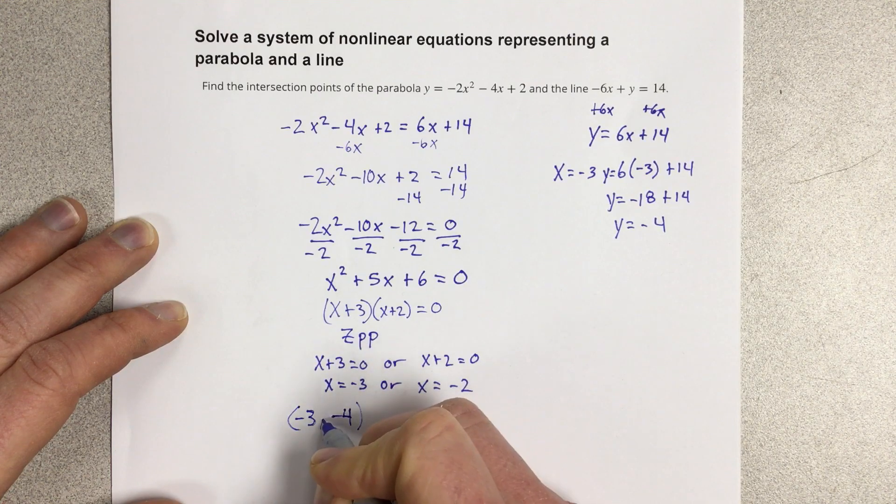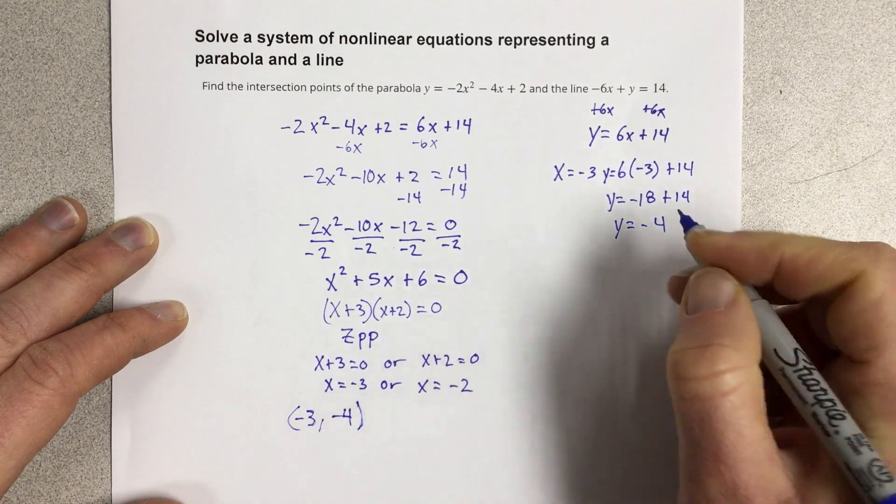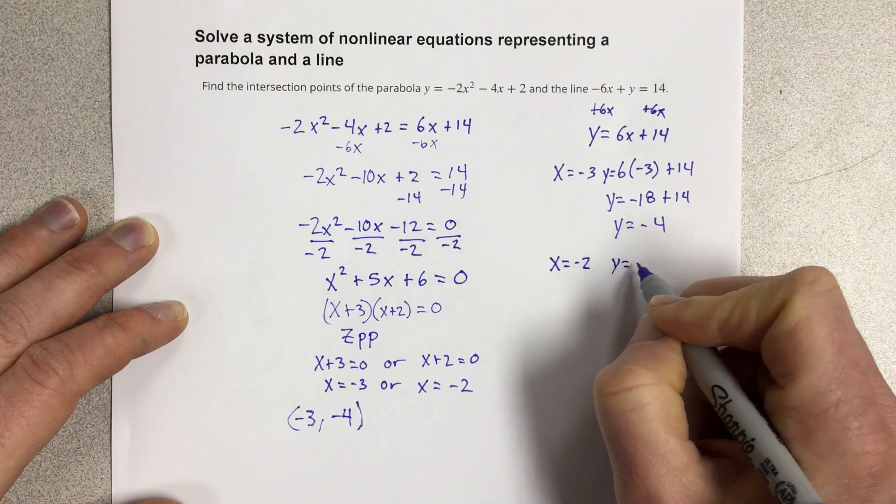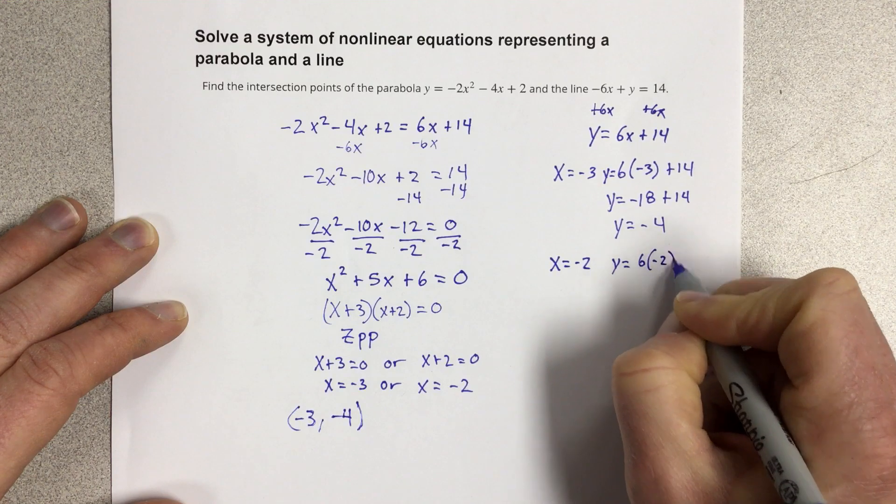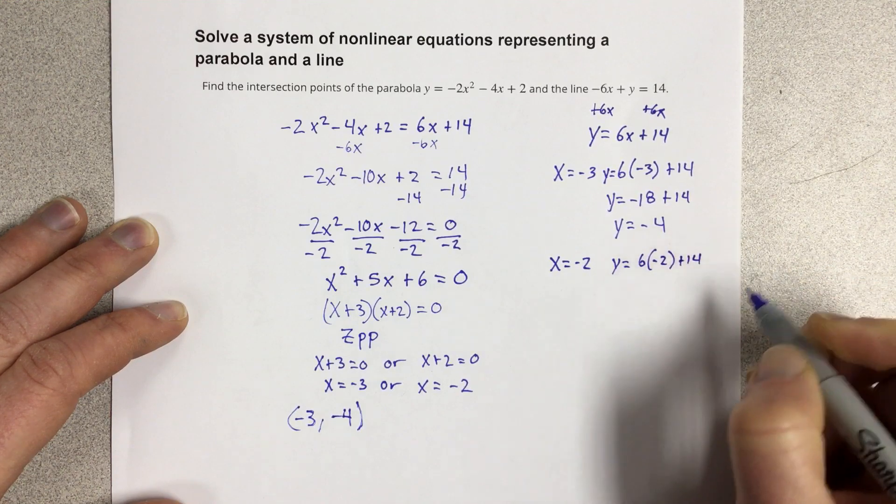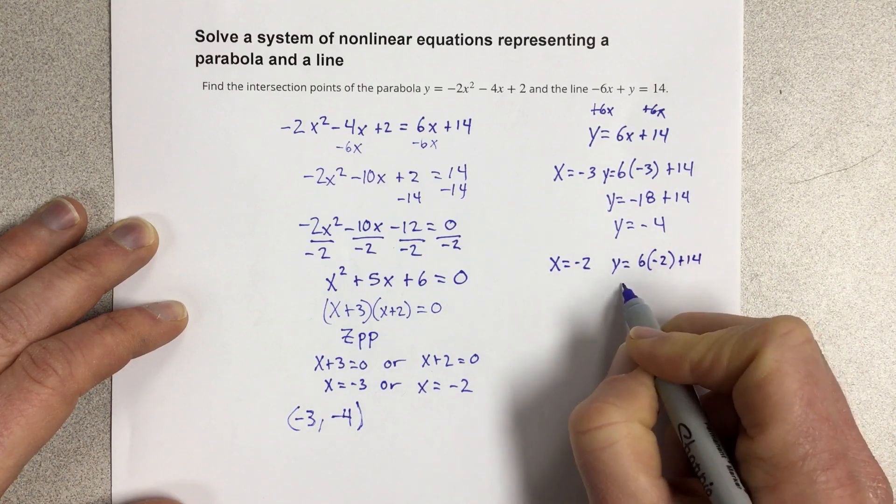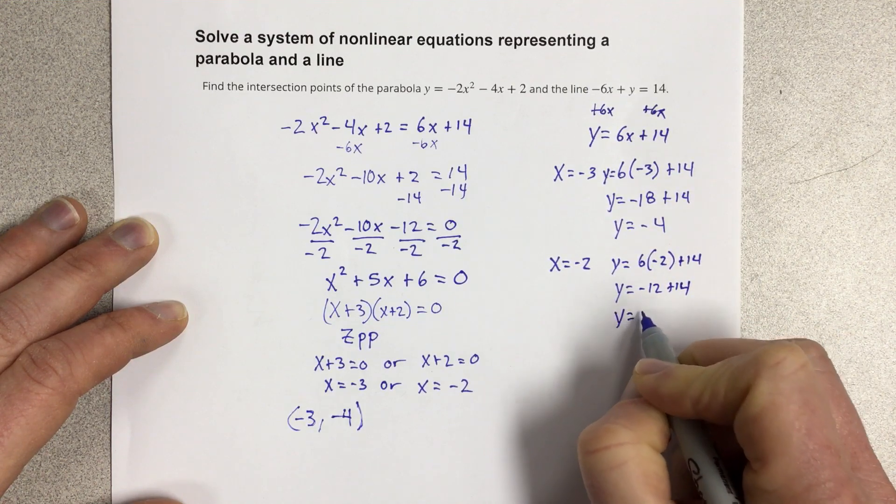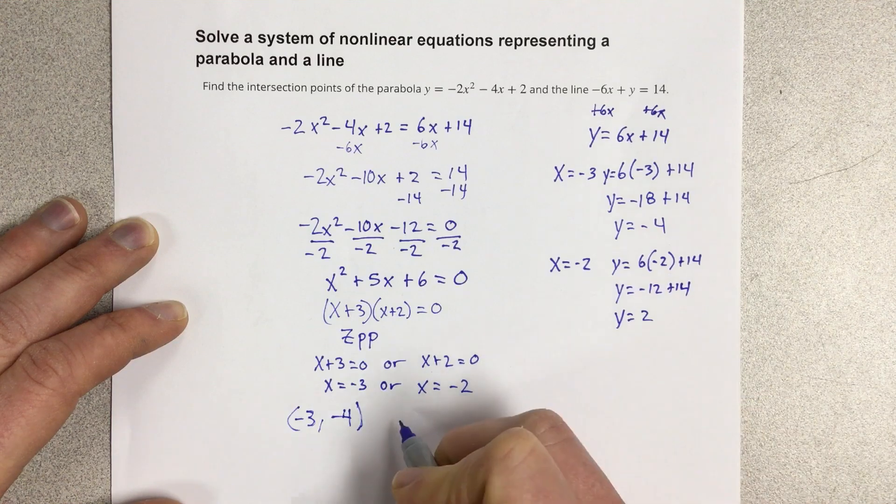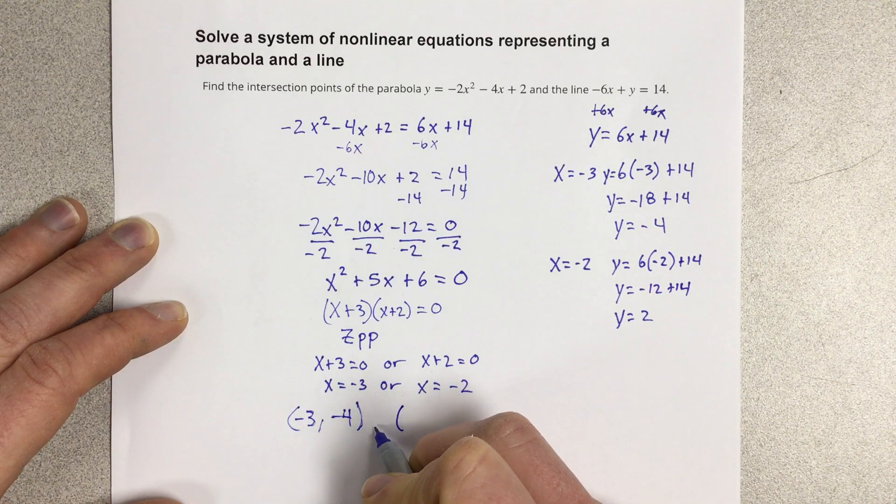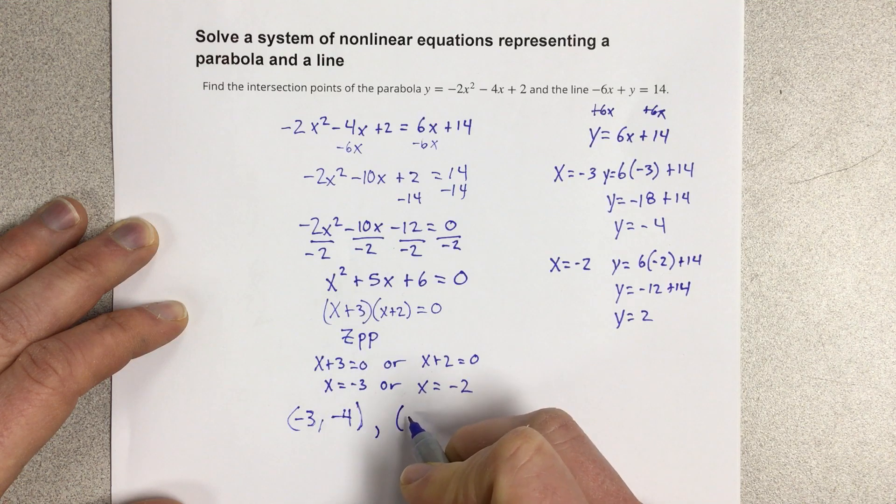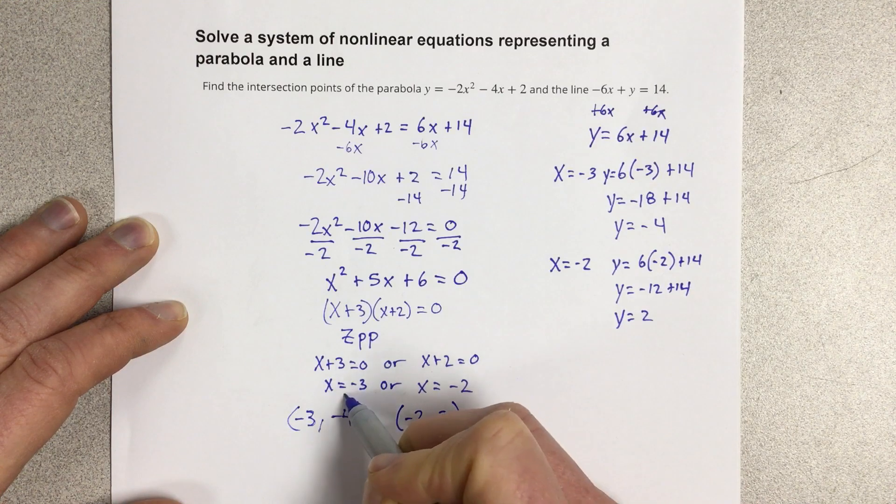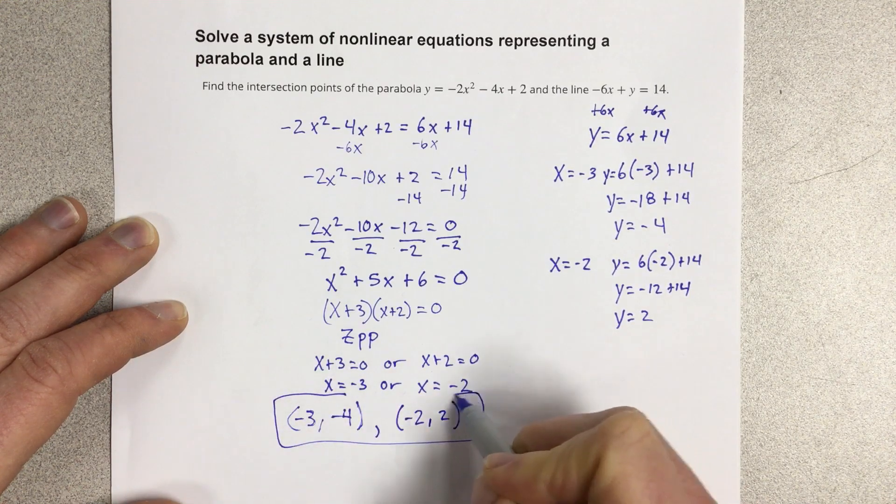And then our second possible solution to the system is if x equals negative 2. Then I would have y equals 6 times negative 2 plus 14, which is going to give you negative 12 plus 14, which is 2. So I end up with a second solution to the system, which is negative 2 comma 2. So these are the two solutions to the system.